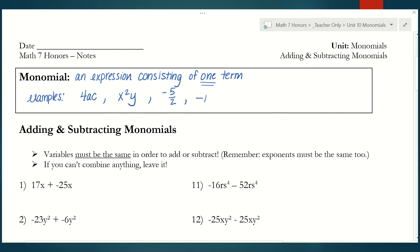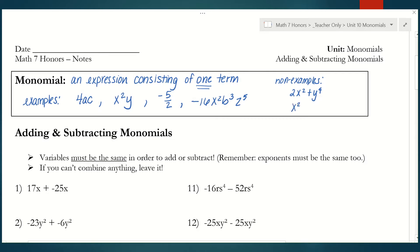You might have something super long like negative 16x squared, b to the third, z to the fifth — again, all of those are connected by multiplication, so it makes it one term. There are things called binomials, which might look like 2x squared plus y to the fourth — that's considered a binomial because it's an expression consisting of two terms. As soon as you see that plus in there, that makes it have two different terms. Or maybe x squared plus 3x minus 10 — that is considered a trinomial because it has three terms. So adding and subtracting are the things that separate terms.